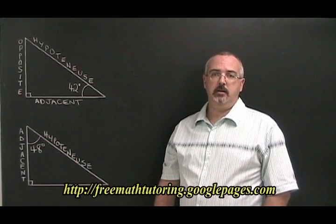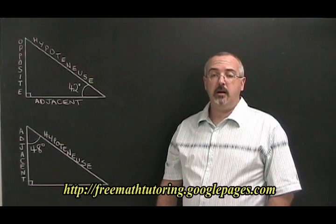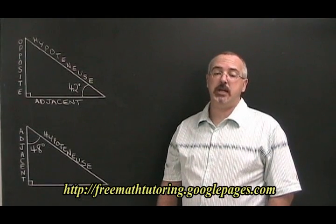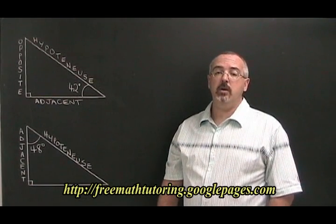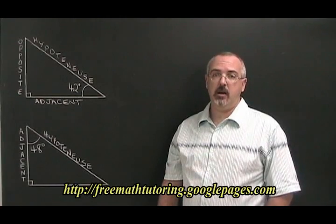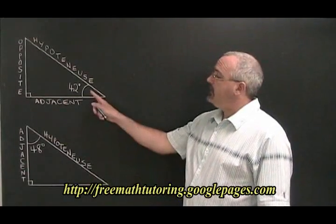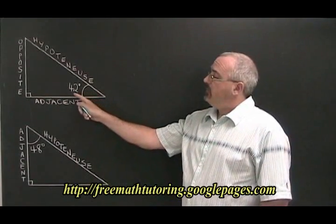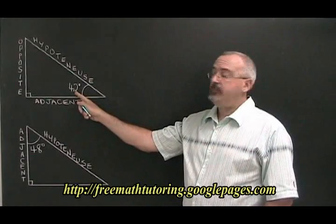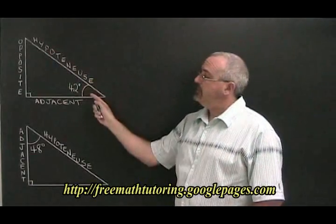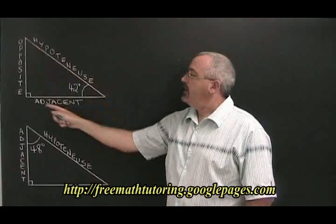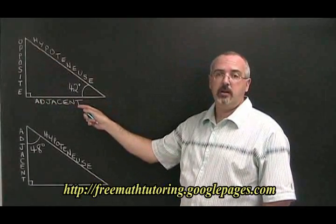The CAH formula involves an angle, the hypotenuse, and the adjacent side. We have to know how to figure out which is the adjacent side in our triangle. In this triangle, we're working with the 42 degree angle. This is the hypotenuse, and we know that this is the opposite side. The other side is the one that we call adjacent.